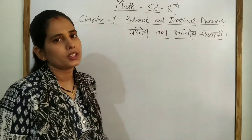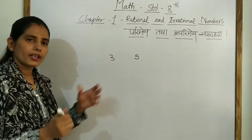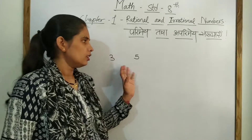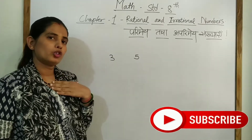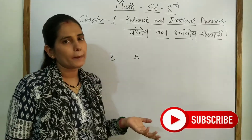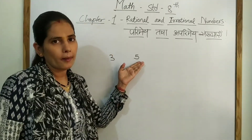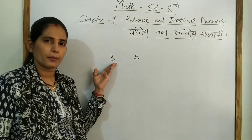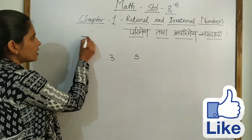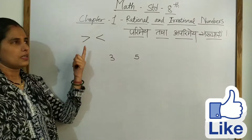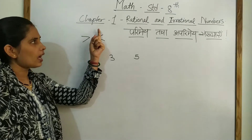I will show you a small example. Here is 3 and here is 5. Now we will know which Sankhya is big and which is small. You will notice that 5 is the bigger number and 3 is the smaller number.